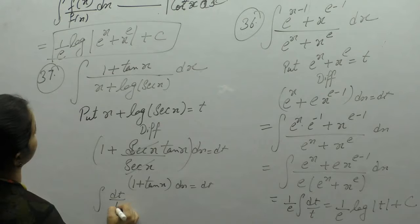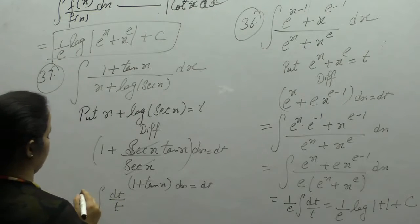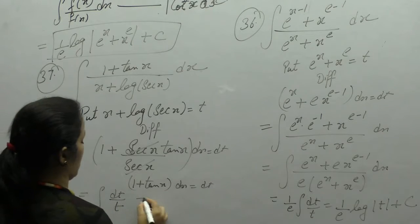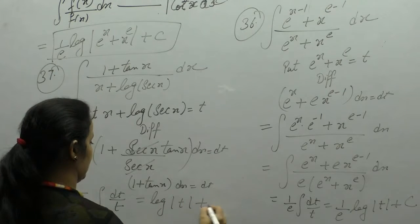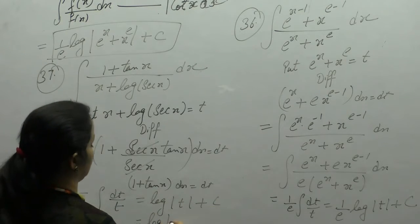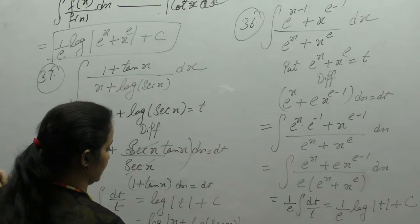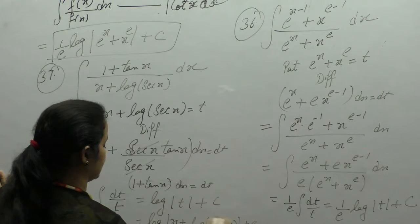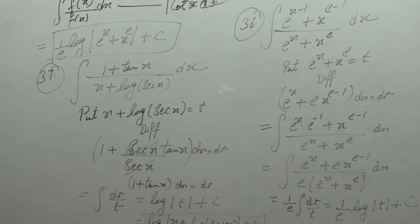Again we have the term dt upon t, which gives log of t plus c. And t here is x plus log(sec x), so the answer is log of (x + log sec x) plus c.